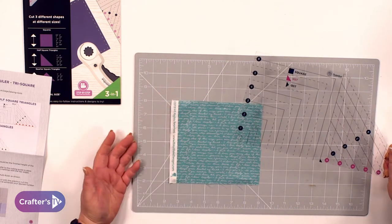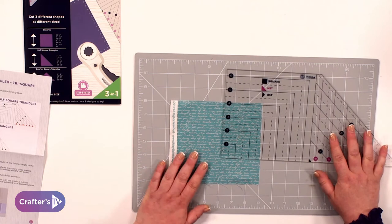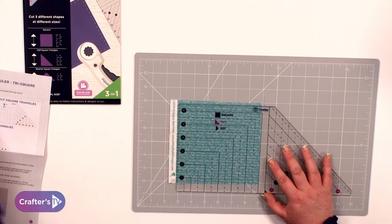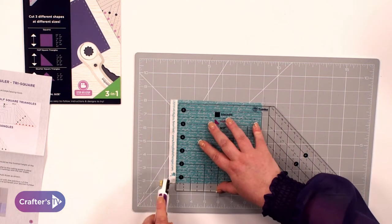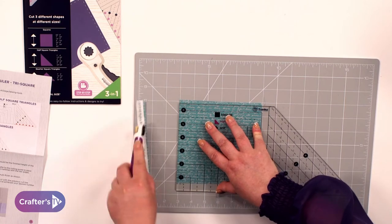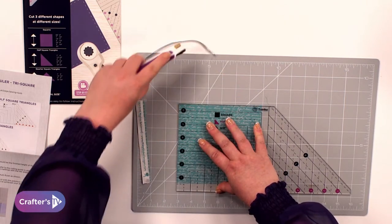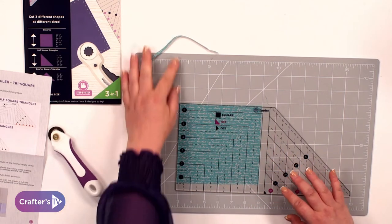Let's say I want to cut a four and a half inch square. What you first need to do is straighten up your edges because you need to start with a straight edge. Also with these tri-rulers, you can use any of our rotary cutters. We've got the 28mm, we've got the 45mm or we've got the 60mm. They all work.